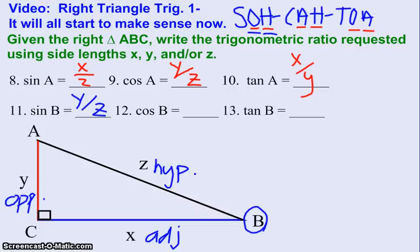Where the cosine of angle B, so looking from the perspective of this angle B right here, cosine, I look up at SOH-CAH-TOA, it says it is adjacent over hypotenuse. Adjacent over hypotenuse is X over Z.